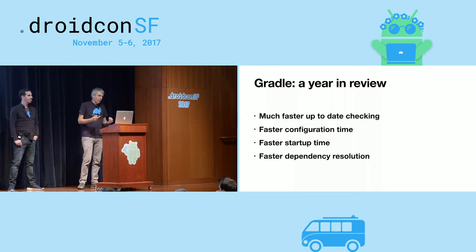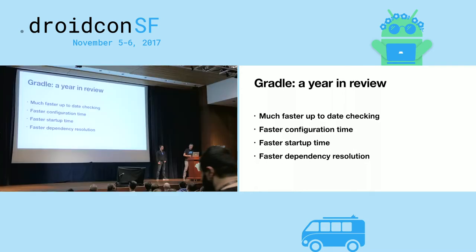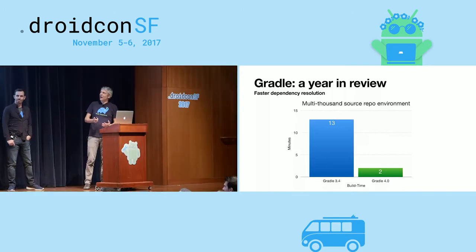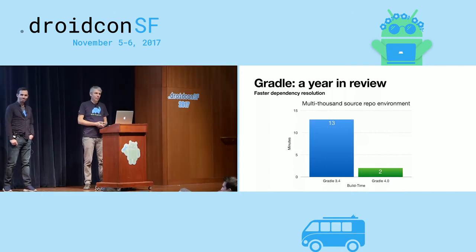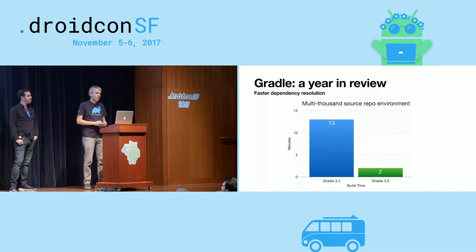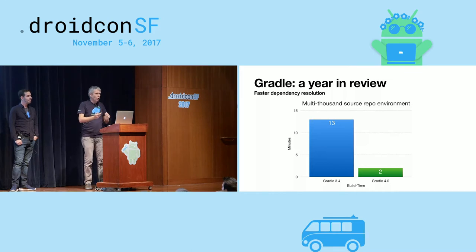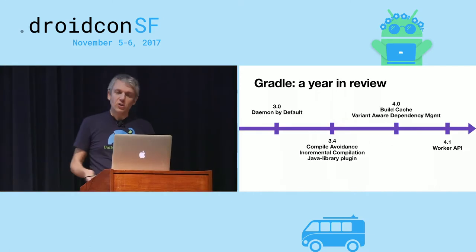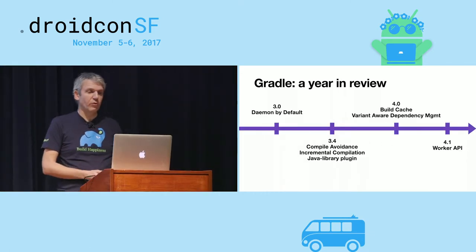Build performance is very sensitive to your specific build. For example, at Netflix, where they have thousands of source code repositories doing binary integration, dependency resolution was a huge bottleneck. We brought build times down from 30 minutes to two minutes with faster dependency resolution. For your Android build, it might be three seconds. Certain performance capabilities very much depend on the environment — how effective and how relevant they are for you. So let's focus on what was really important for Android.